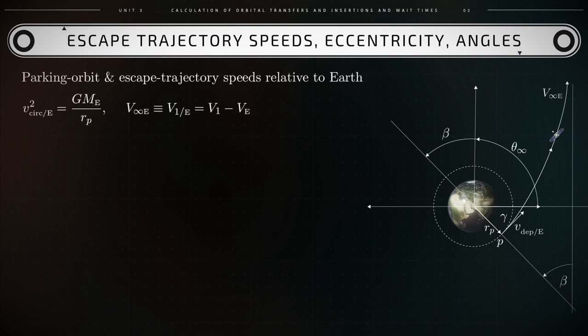Next we will calculate the condition for a spacecraft to escape from Earth's gravity. From the Hohmann calculations, v1 is the speed relative to the Sun of a spacecraft on its journey to leave Earth and reach Mars. Let's calculate these flight conditions around Earth that will allow the spacecraft to reach this particular velocity v1. The first step is to calculate the reference velocity v_circ_e of the spacecraft relative to Earth in a circular parking orbit of given radius rp. This is obtained as v_circ_e squared equals gme over rp, where gme is Earth's gravitational parameter.